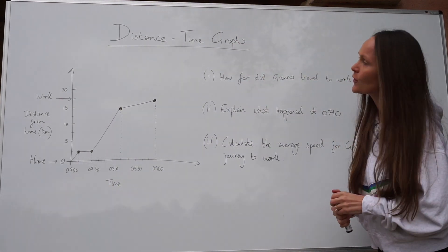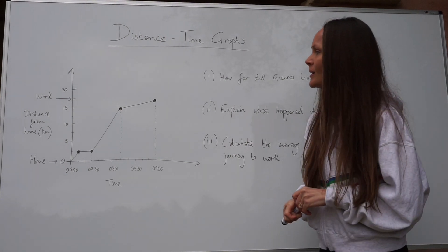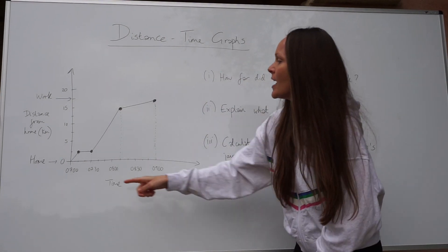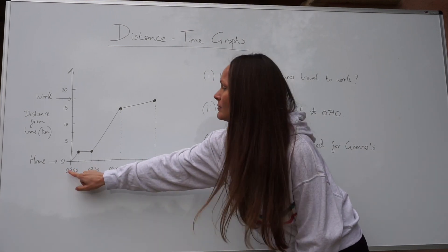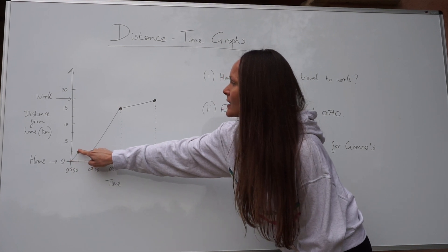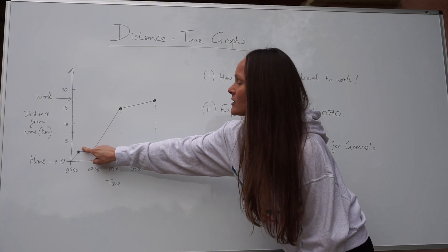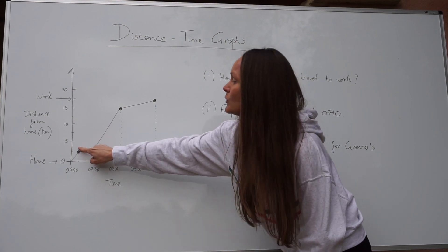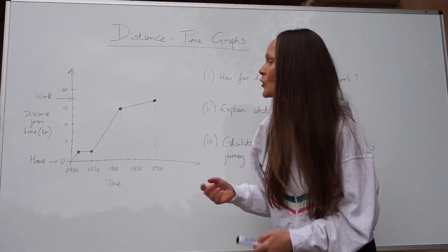For the first part of the question it says, how far did Gianna travel to work? So let's have a look at this distance time graph. We can see she left home at seven in the morning, and then you can see the distance from home is increasing. Then there's a horizontal line. That just means that she stopped moving. Whenever you see a horizontal line on a distance time graph, it means the person is stationary. They've stopped.